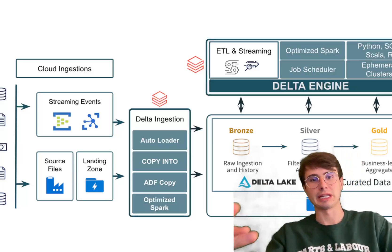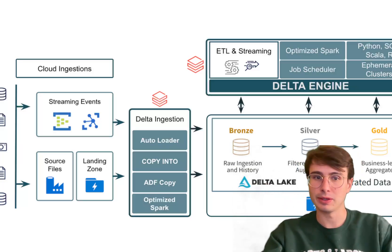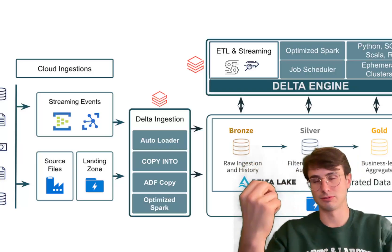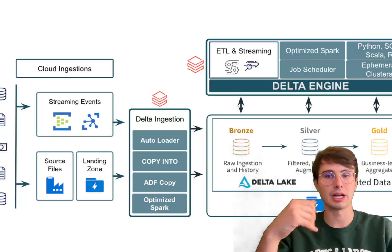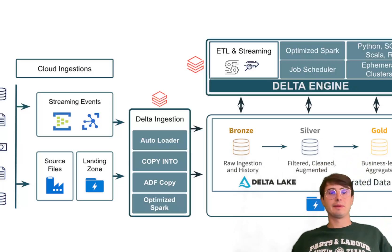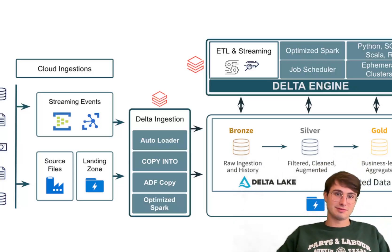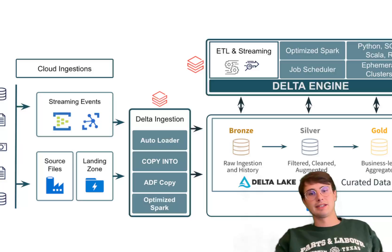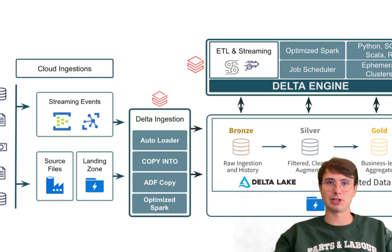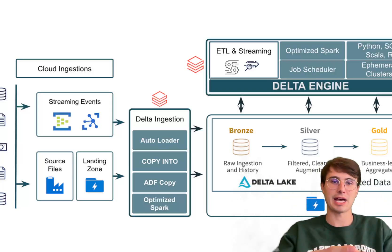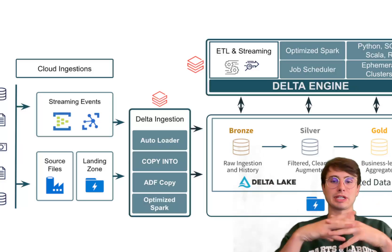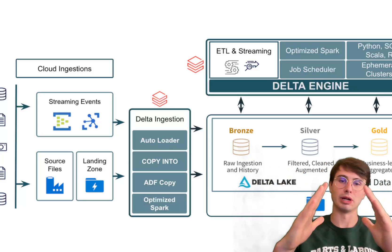Four, time travel capability — the ability to query historical data versions is a really nice quality-of-life feature for auditing, compliance, troubleshooting, and even machine learning workflows. Five, unified data processing — Delta Lake's support for both batch and streaming data processing simplifies the data architecture, allowing you to consolidate on a single format and platform and reduce the operational complexity of having two different platforms that need to play nice together.